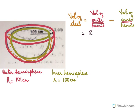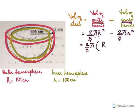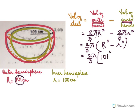So: outer hemisphere volume = (2/3)πR³, inner hemisphere volume = (2/3)πr³. Taking (2/3)π common: volume = (2/3)π(R³ − r³). We know the outer radius R is 101 and inner radius r is 100. So we compute (2/3) × (22/7) × (101³ − 100³).